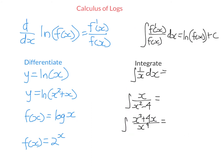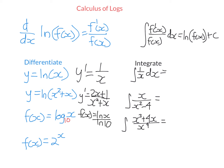Let's look at some calculus. To differentiate ln of a function, you put the function on the bottom and its derivative on top. The derivative has no logs in it. To differentiate y equals ln(x), it's just 1 over x. To differentiate ln(x² + x), you put x² + x on the bottom and its derivative 2x + 1 on top. To differentiate log x (base 10), use the change of base formula to write it as ln(x) over ln(10). Since ln(10) is a constant, the derivative is just 1 over (x·ln10).